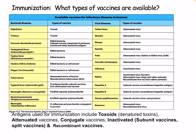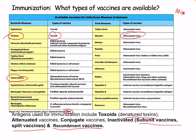Currently available vaccines use several different antigens, including toxoids, attenuated virus vaccines, conjugate vaccines, inactivated or subunit vaccines, split vaccines, and recombinant vaccines. For example, diphtheria and tetanus — most people get the tetanus toxoid every 10 years. For tuberculosis, the BCG vaccine uses an attenuated strain of Mycobacterium tuberculosis. This is a good figure to review if you want to understand the range of vaccine types available.